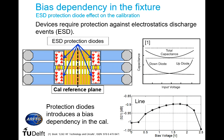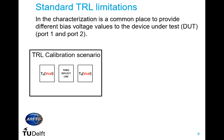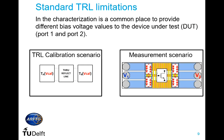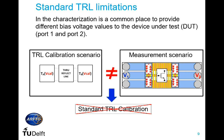This variation is not something we expect because the line is a passive structure. That means this variation comes from an error in the calibration. When we perform the TRL calibration, the TRL uses as standards: thru, reflect, and line. We have to apply the same voltage at both ports — usually zero. We can apply a different bias using an open as reflect, but in the typical measurement scenario we characterize our device using different bias on port one and port two. That means the measurement scenario does not match the calibration scenario, and we cannot use a standard TRL as calibration.